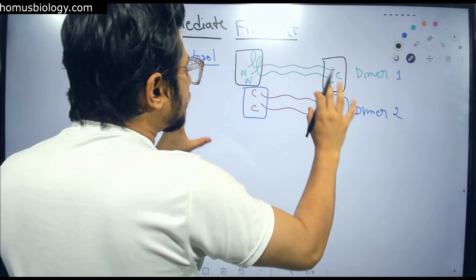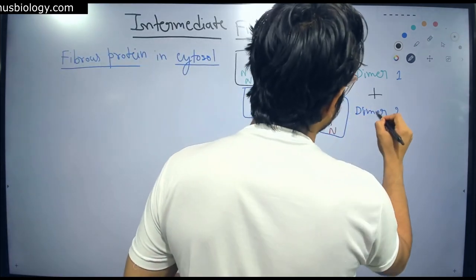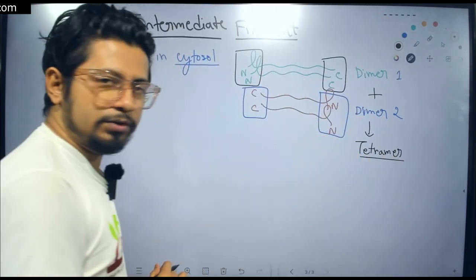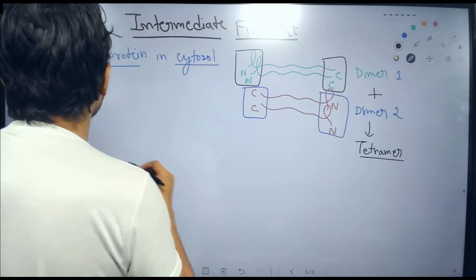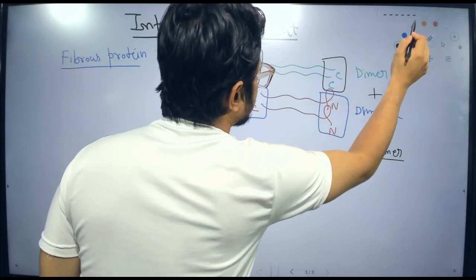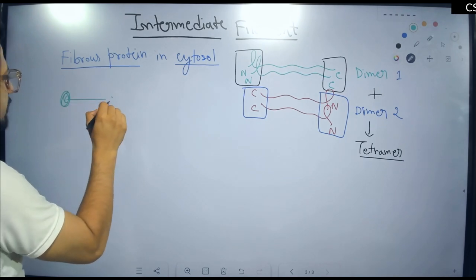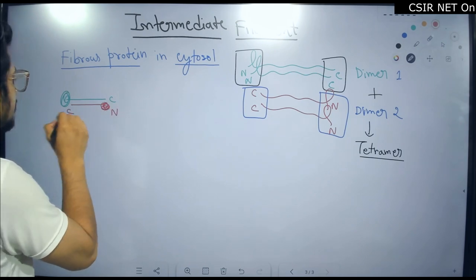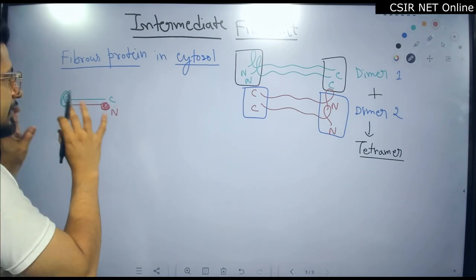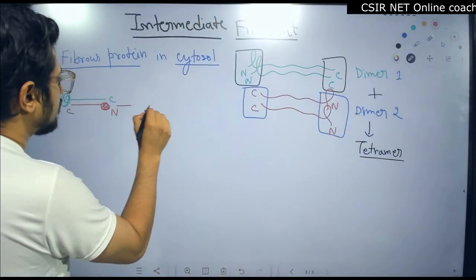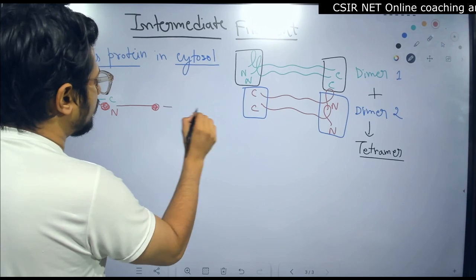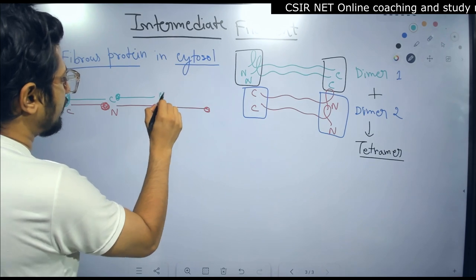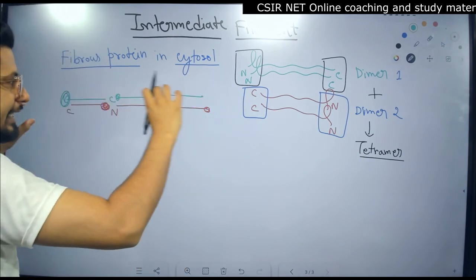When the anti-parallel dimers stick together, they form a tetramer. This tetramer — shown here with green (N to C) and red (C to N) — represents the anti-parallel arrangement. Multiple tetramers then join together one after another, end to end.